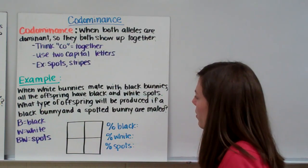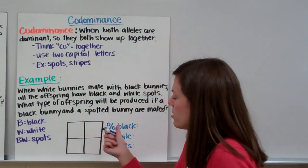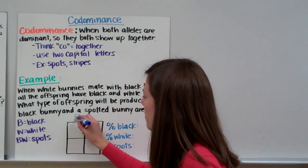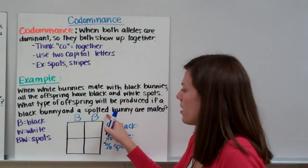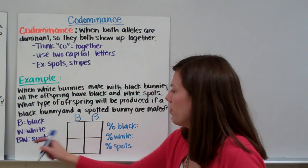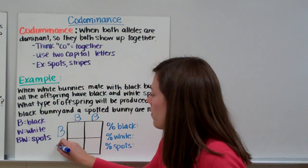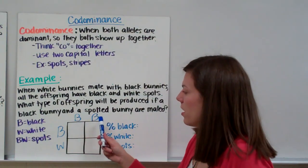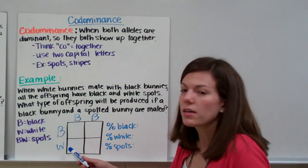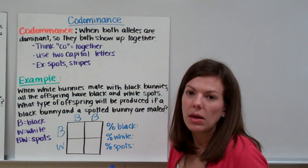In our problem, we are crossing a black bunny, so the black bunny would be big B, big B. And a spotted bunny - the spotted bunny would be BW. If you rearrange your Punnett square so you have the BW on top and the BB on the side, that works, you'll still get the same answer.